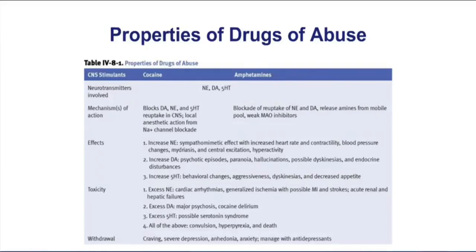We've looked at the mechanism for cocaine, blocking the reuptake of norepinephrine, but it can also block the reuptake of dopamine importantly as well. Whereas amphetamines can cause the release of neurotransmitters, especially norepinephrine, but can also, to some extent, block its reuptake as well.